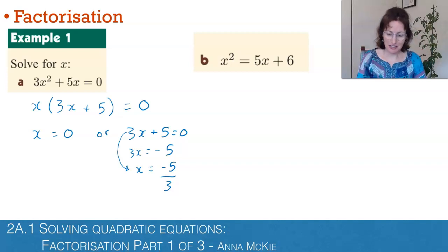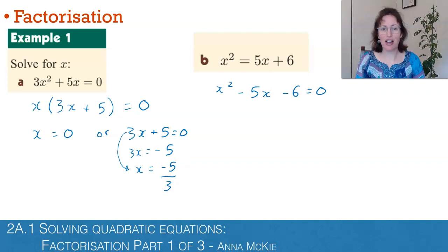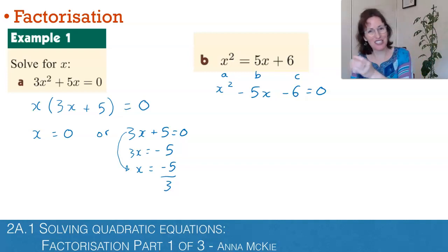Second one here. To be able to use the null factor law, we need to gather all our terms onto one side. We traditionally do the left-hand side and therefore have the right-hand side equals zero. Is there a common factor? No. Now, this is the technique which I'm assuming you've done before. Sometimes we call it the AC method, where term one, two, and three: the coefficient of x squared is a, the coefficient of x is b, and the constant term on the end is c.